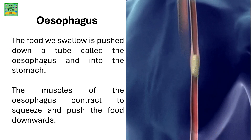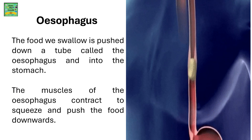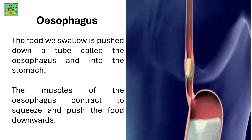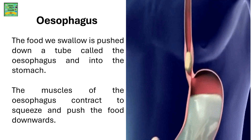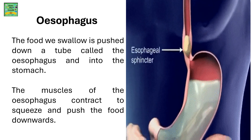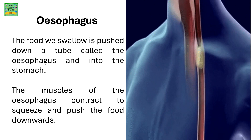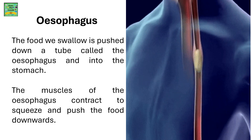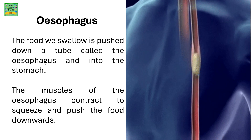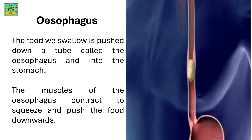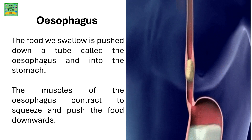Esophagus. The food is swallowed and pushed down a tube called the esophagus and then into the stomach. The muscles of the esophagus contract to squeeze the food and push it downwards into the stomach.